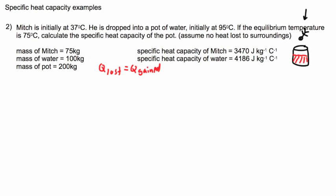Who lost temperature and who gained temperature? The water is going to lose temperature and the pot is going to lose temperature because initially the water and the pot are touching each other, so we're going to assume they're at the same temperature. Whereas Mitch is at 37, so I'm going to gain. On the right side it's going to be just Q Mitch.